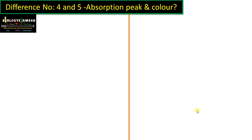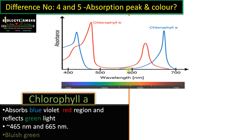Difference number four and five: regarding absorption peak and color. This is the absorption spectrum of chlorophyll A and B. Chlorophyll A absorbs the blue-violet region and also the red region, and reflects green light. Both chlorophyll A and B reflect green light, which is why plants appear green. The maximum absorption peak for chlorophyll A is approximately 465 nanometers and 665 nanometers, though this may vary in vitro depending on the solvent used in the experiment.